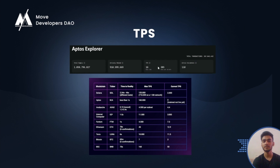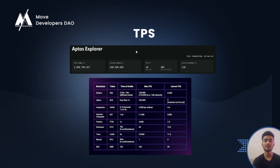Let's compare the TPS of Aptos with other blockchains. Solana provides a maximum TPS of around 120,000, Ethereum around 45, and Bitcoin around 7. Aptos claims to have a maximum TPS of around 160,000, but last time I checked the Aptos explorer the TPS was around 305.